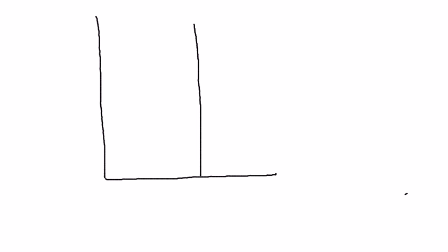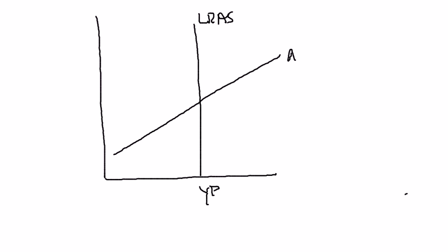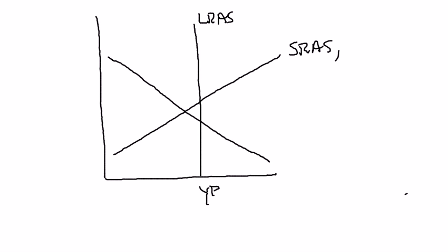Let me explain that by drawing an economy that's not initially in long-run equilibrium. Here's my long-run aggregate-supply curve. I want to draw an economy where the equilibrium GDP is less than potential — so here's potential. I'll draw the short-run aggregate-supply curve, which I'll call SRAS-2, and an aggregate-demand curve that intersects it at a point left of potential. So the economy is at point A, with price level P1 and actual output Y1.